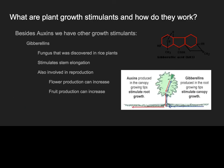Besides auxins, we have other growth stimulants. Gibberellins are a very common growth stimulator — essentially a fungus discovered in rice plants by the Chinese way back in the 1700s–1800s. They are responsible for stimulating stem elongation, and are also involved in reproduction — helping plants produce their reproductive parts — as well as flower and fruit production. These gibberellins can be processed naturally within plants to really help them grow, stimulate reproduction, and increase flower and fruit production.